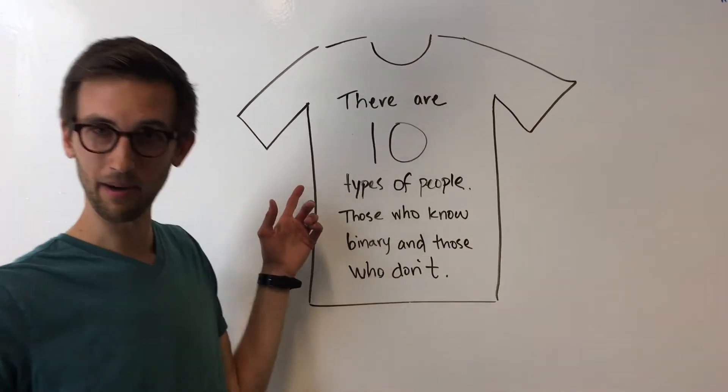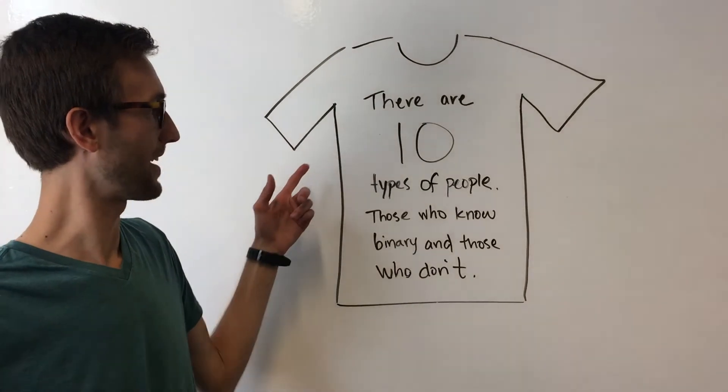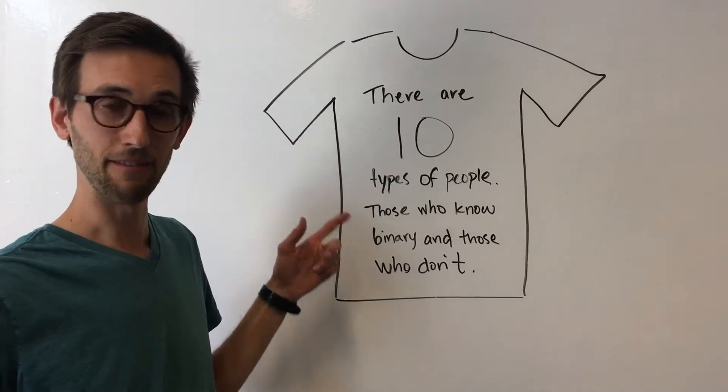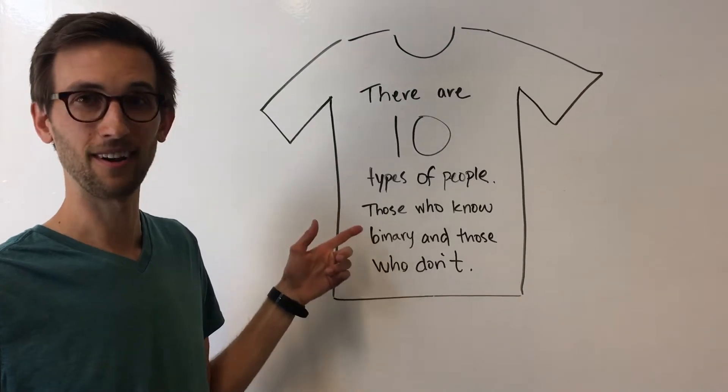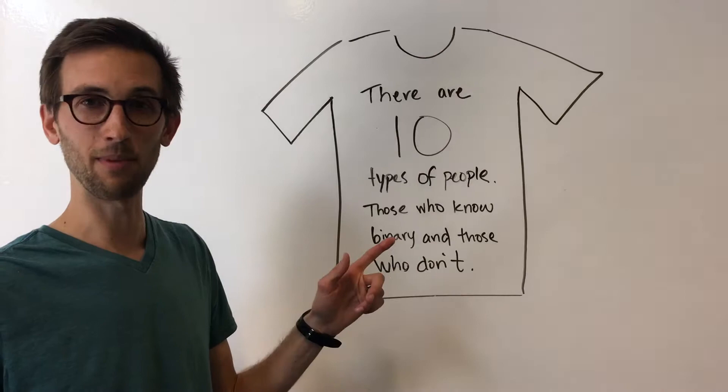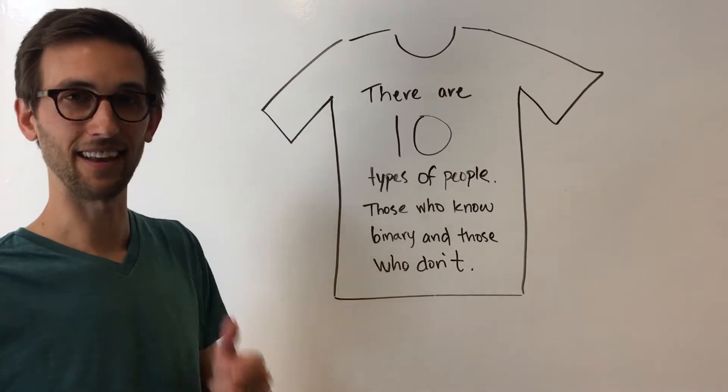I don't know if you've ever seen somebody wearing this shirt before. It says there are ten types of people, those who know binary and those who don't. If you don't know binary you don't get the joke, so we're gonna walk you through what binary is and why computers like it so much and then we'll come back to this at the end and you'll be in on the joke.